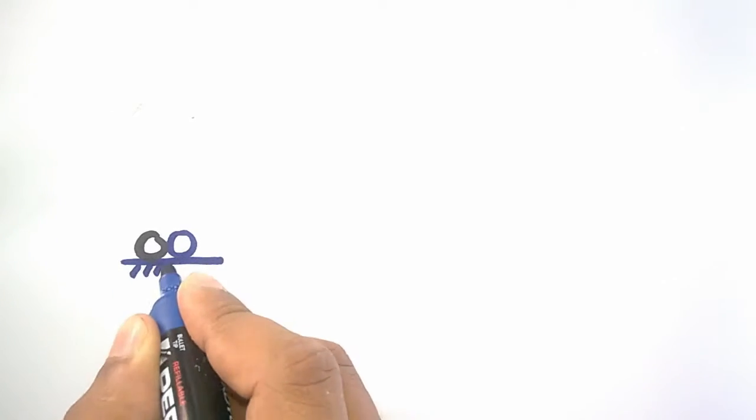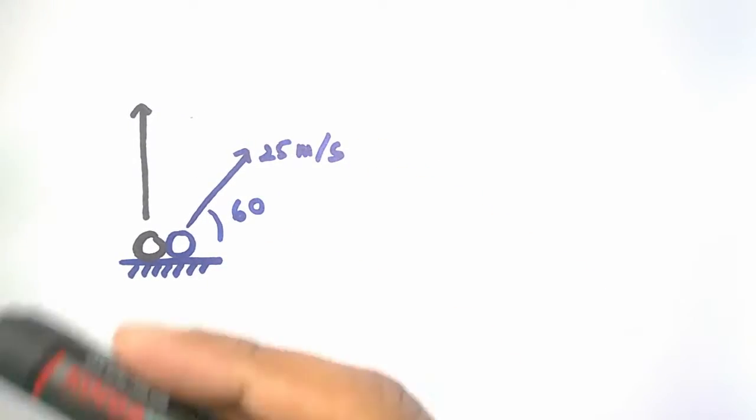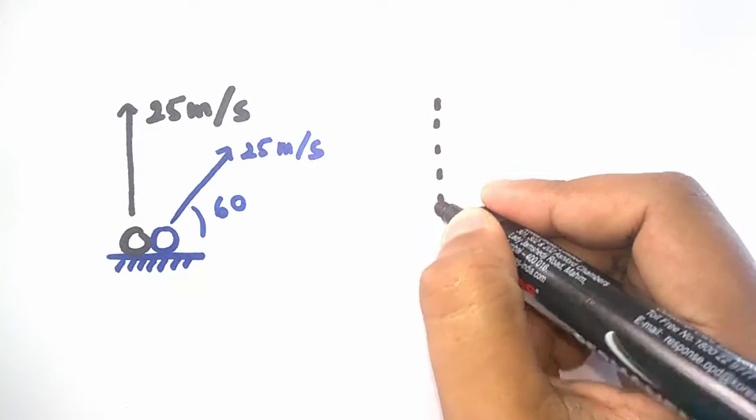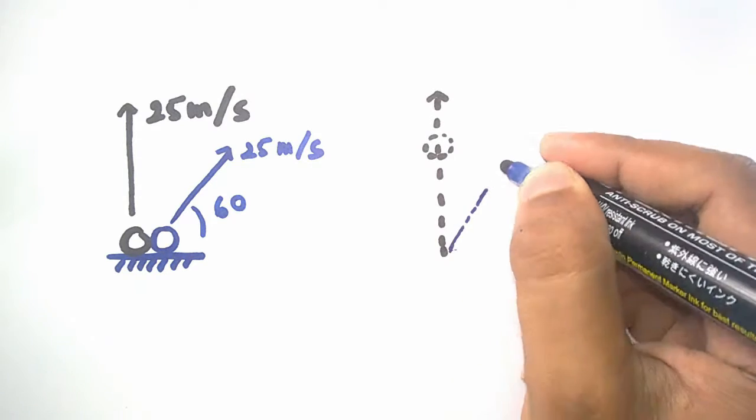So in today's problem, we have two balls thrown from a point at the same time. One of them was thrown vertically and the other was thrown at 60 degrees from the horizontal. The initial velocity of each of the balls was 25 meters per second. Now we have to find the distance between these two balls 1.7 seconds after their launch.